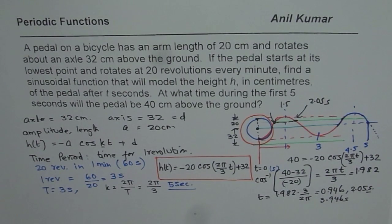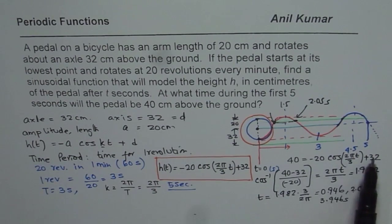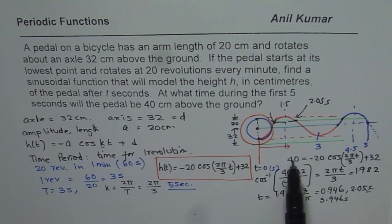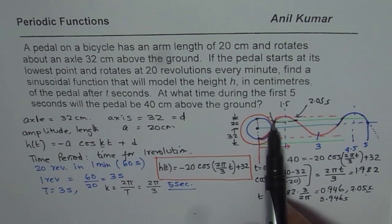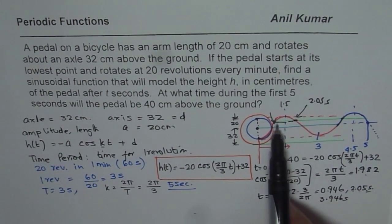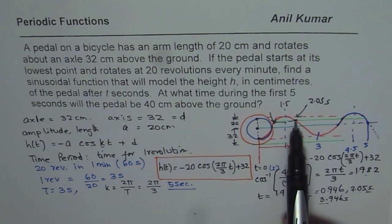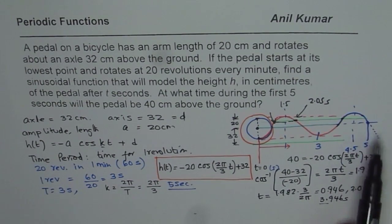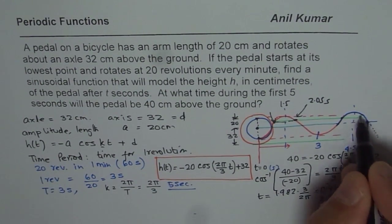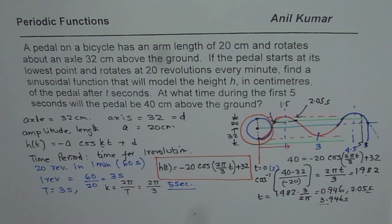To summarize the solution: subtract 32, divide by minus 20, find the inverse cosine to get the angle in radians, multiply by 3, divide by 2π to get t. Once you get t, find the mirror image 1.5 away to get 2.05, then add the time period of 3 to get the third point at 3.946. Adding 3 to 2.05 gives 5.05, which is outside 5 seconds and therefore not included. Thank you and all the best.